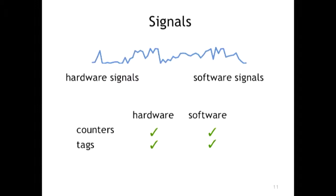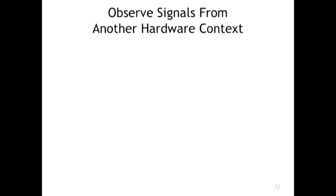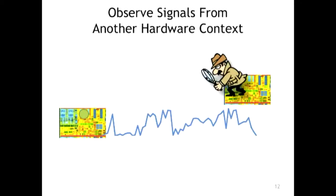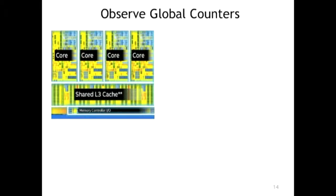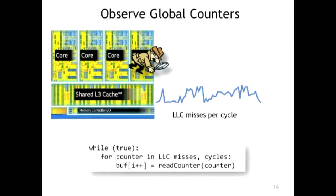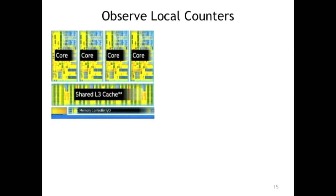Our key insight is: how can you observe these signals at high frequency? We observe the signal from another hardware context. If one CPU keeps generating signals, we try to observe from another CPU — that's simple. For global counters, like last-level cache miss per cycle, you can observe this counter from any core. Your code just loops reading counters into a buffer, and your sampling frequency is limited by how fast you go through this loop — not by interrupt handling overhead.